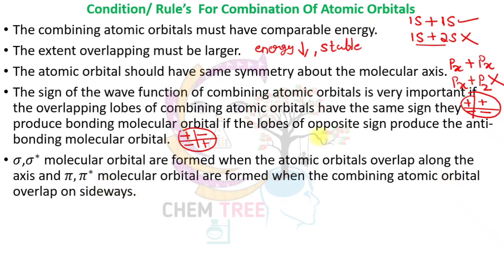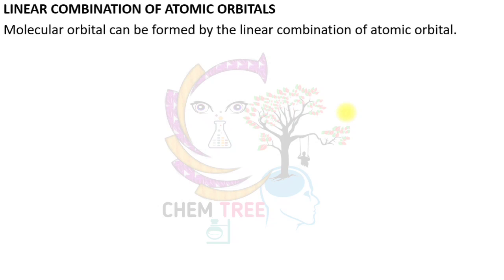Pi and pi star molecular orbitals are formed when the combining atomic orbitals overlap sideways. That covers the rules or conditions for the combination of atomic orbitals. Now, how are molecular orbitals formed? The formation of molecular orbitals is based on the linear combination of atomic orbitals, or LCAO.